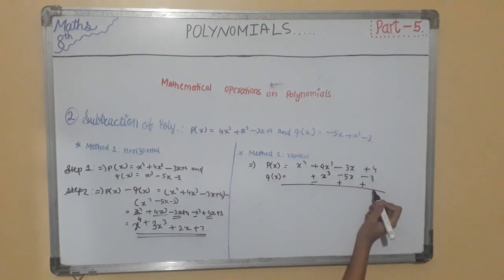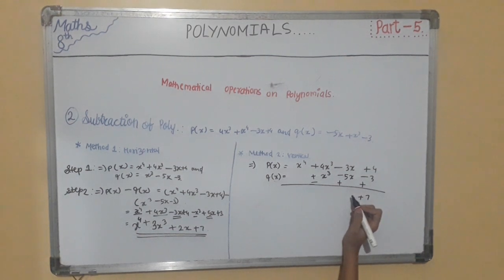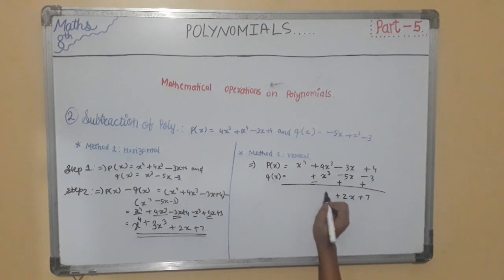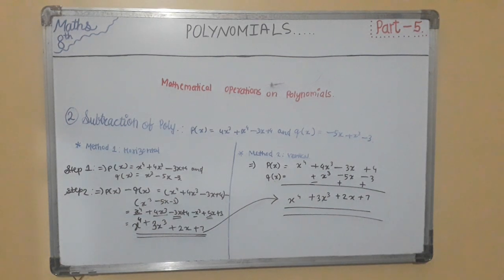Now we will proceed. 4 + 3 will become +7. -3x + 5x will become +2x. 4x³ - x³ will become +3x³, and x⁴ as it is. Therefore both answers are the same and I hope you have understood them.